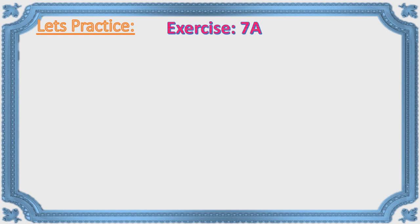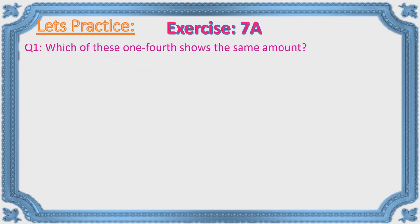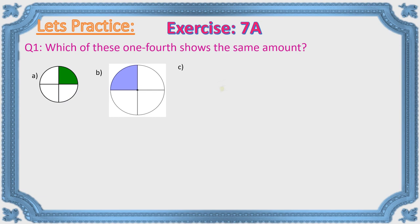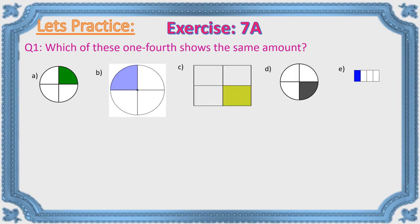Let's practice exercise 7e, question one: Which of these one-fourths shows the same amount? Looking at the options, option A is a circle with one-fourth shaded, but one circle is smaller and one is bigger — so they are not the same amount. Another option has a different shape, and the last is way too small with a different shape. A and D are showing the same amount. Yes, correct.